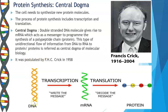It was postulated by Francis Crick. You have your DNA molecule, and there is a process called transcription where you take the message from the DNA and form your messenger RNA. Then you have the process of translation where there is decoding of the message and proteins are synthesized. This is called the central dogma of protein synthesis.